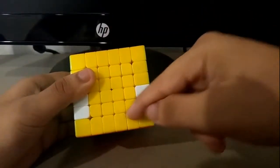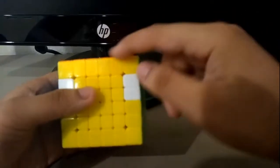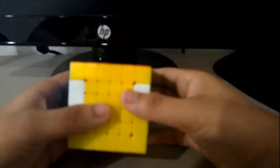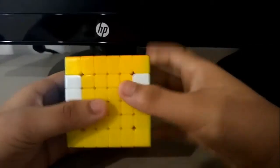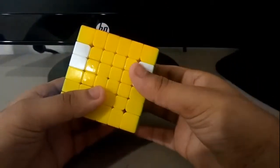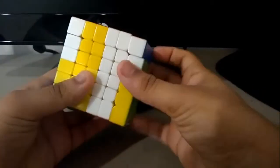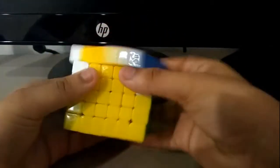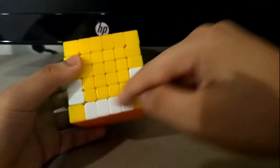Now to get the bottom of the smiley face, do a Z2, which is rotating the cube like this two times. And then do the parity algorithm, the opposite parity algorithm for 6x6. If you don't know what the parity algorithm for 6x6 is, then just follow these moves. And there we go.